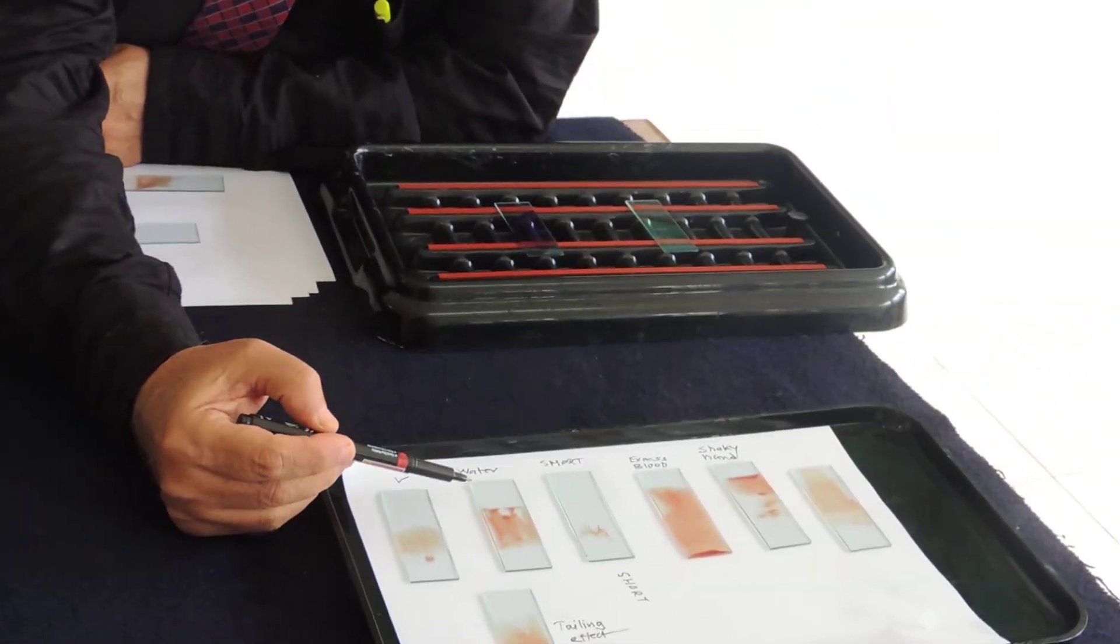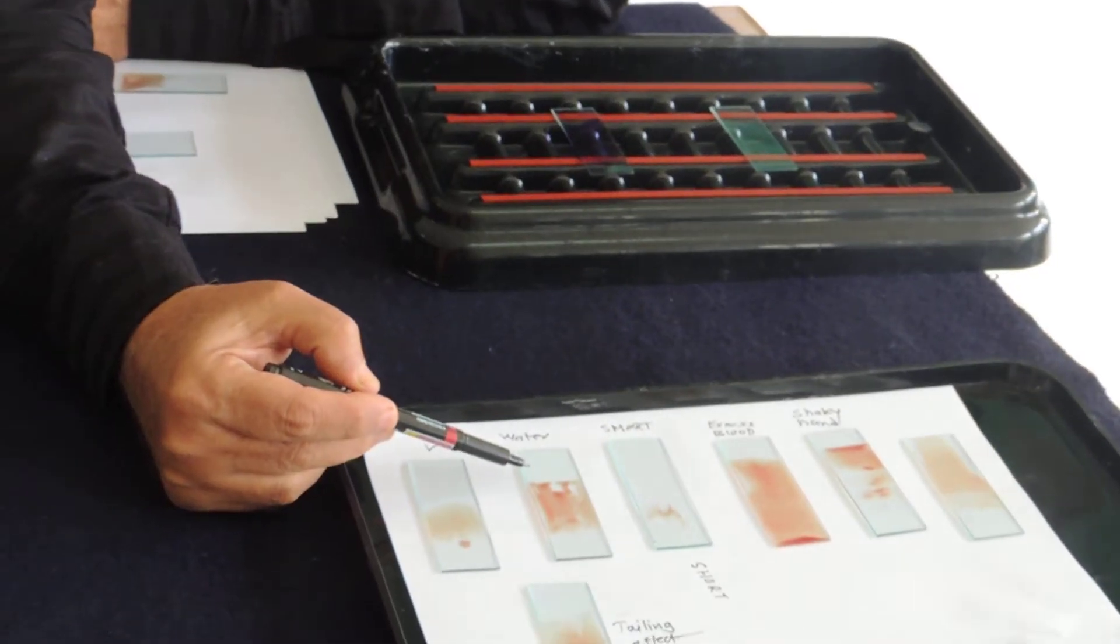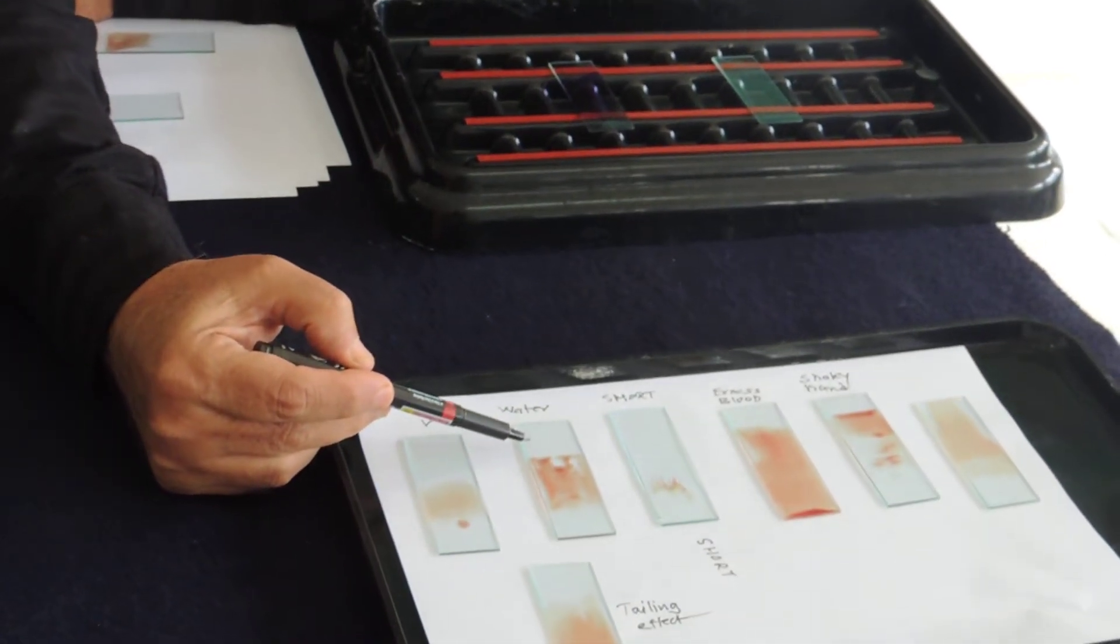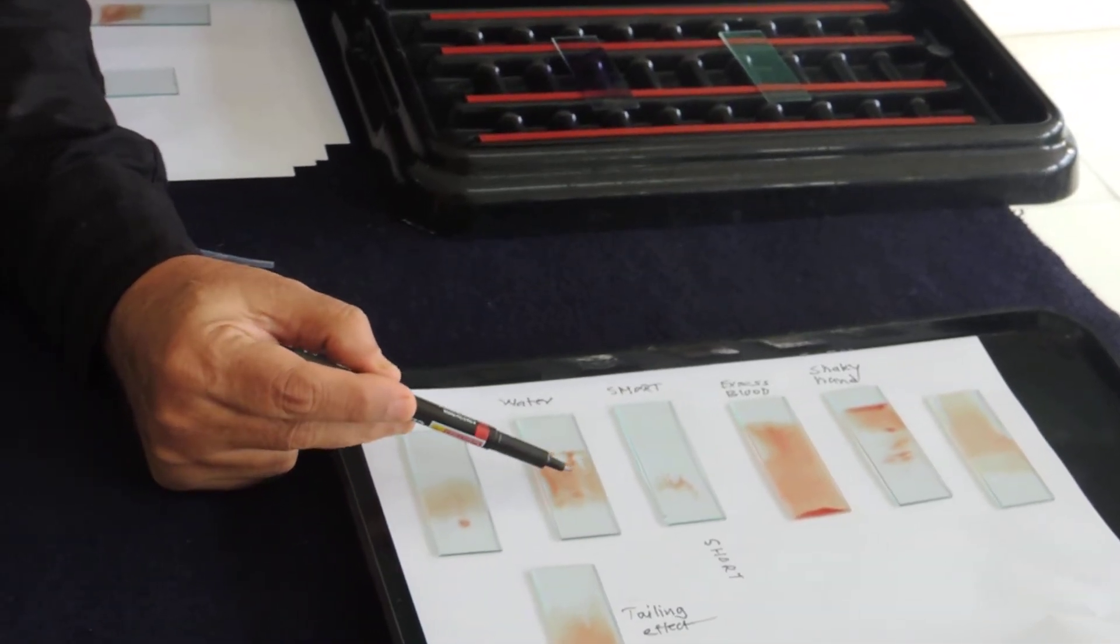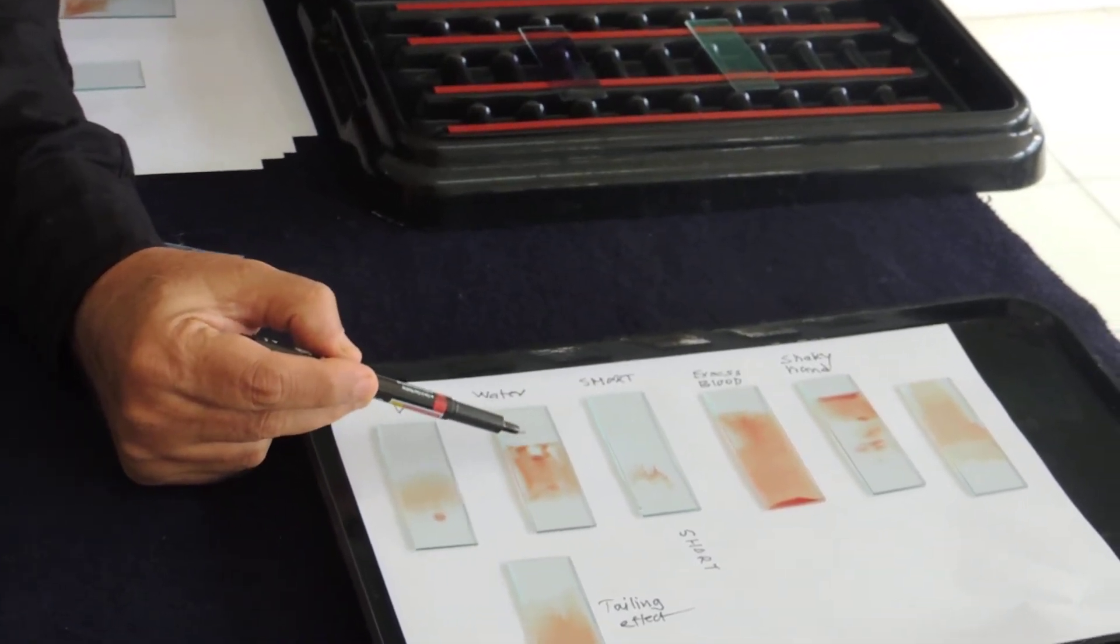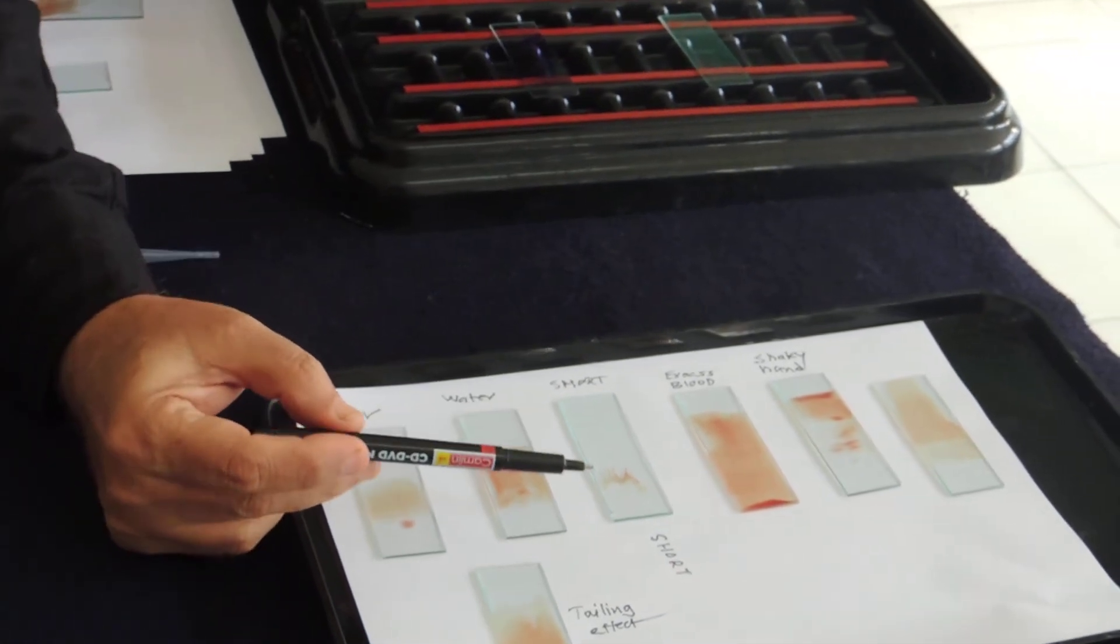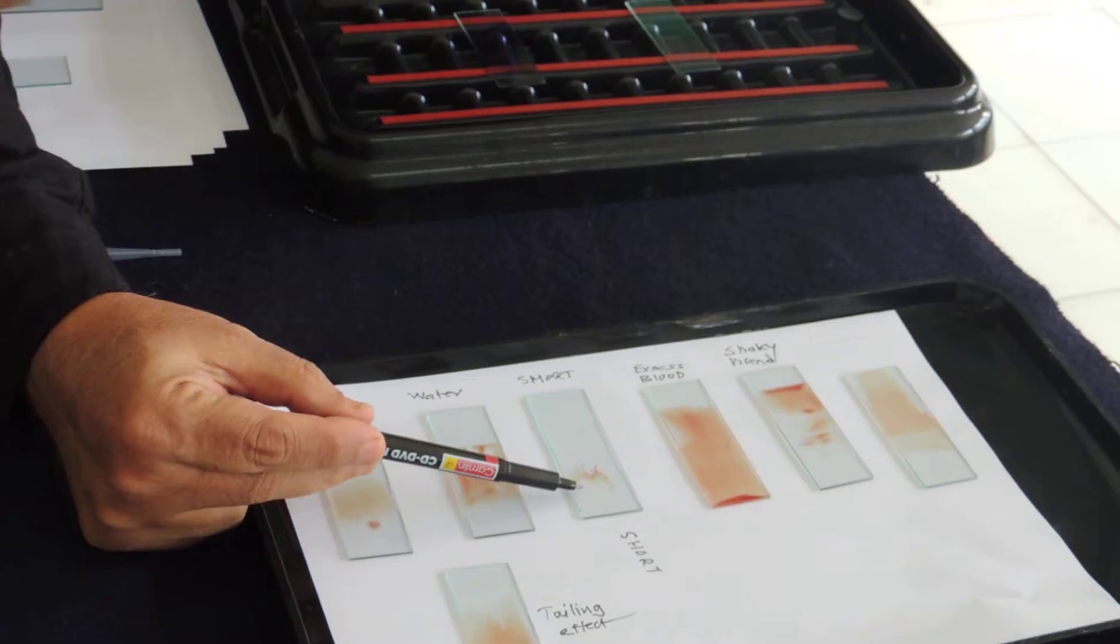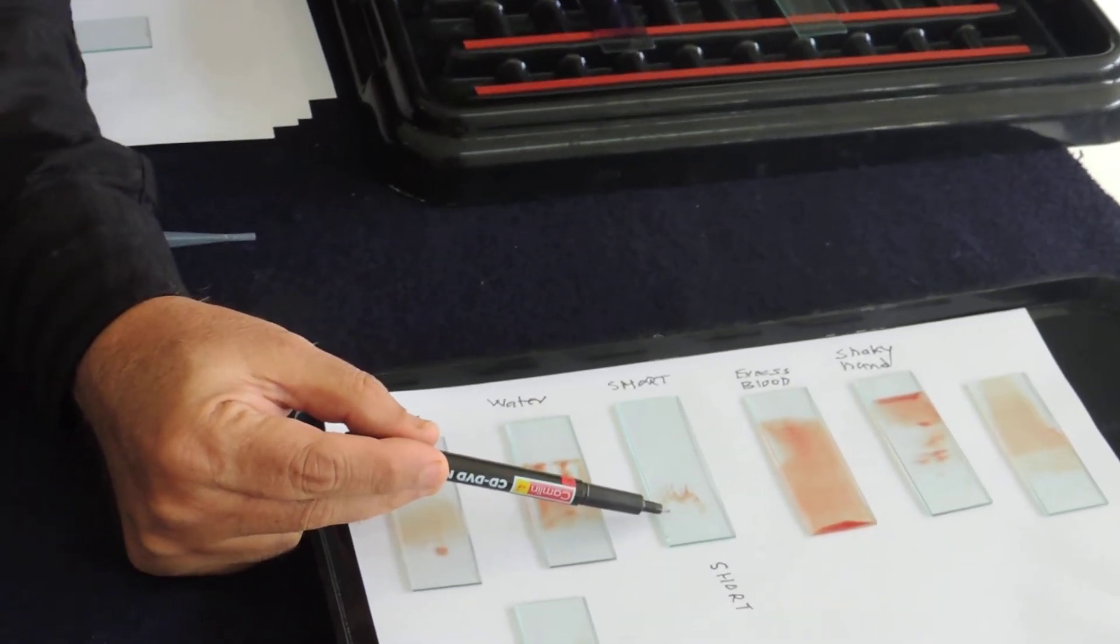Now this is what has happened. Sometimes the students wash the smear or take the slide and wash under the water and the water artifacts come. So you see the holes and this. Don't wash the smear. The slides are already cleaned and given to you. If too small a drop is taken, this is what happens. This is a very small short smear that results.